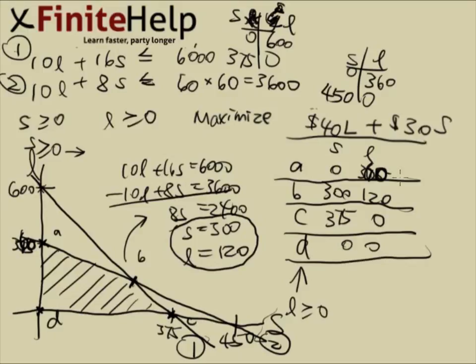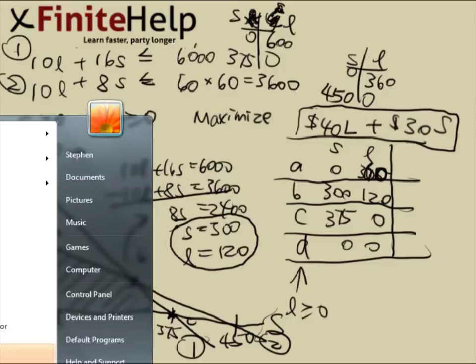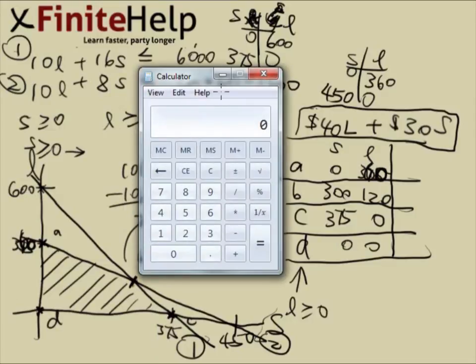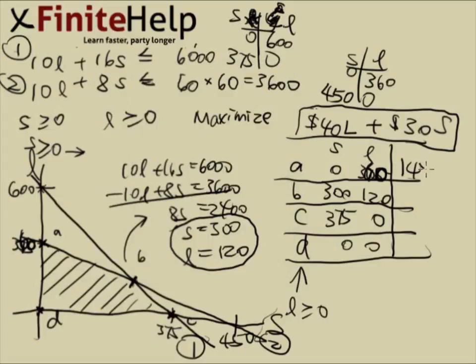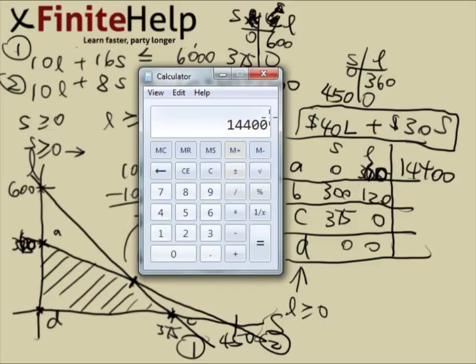Now the final step here, we'll have to plug each of these points into our objective function. 40 times 360. Let's pull out the calculator. So here we have 360 times 40 plus 30 times 0. So it's just 360 times 40, and that's 14400. Here this is going to be 300 times 40, which is 1200, plus 30 times 120, which is 3600. This is 15600.